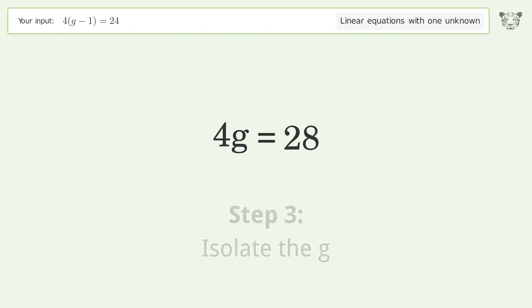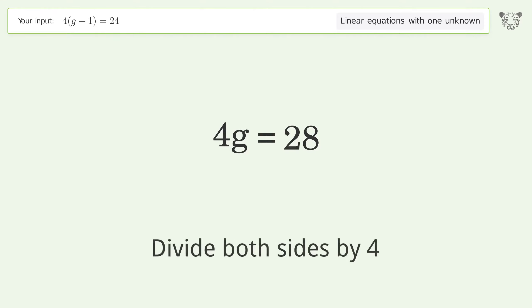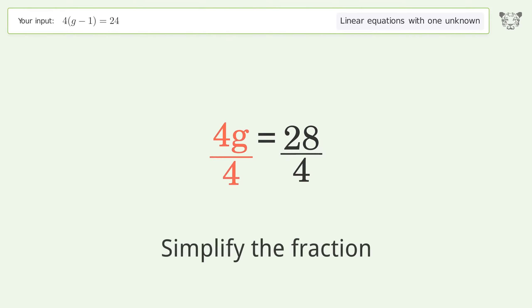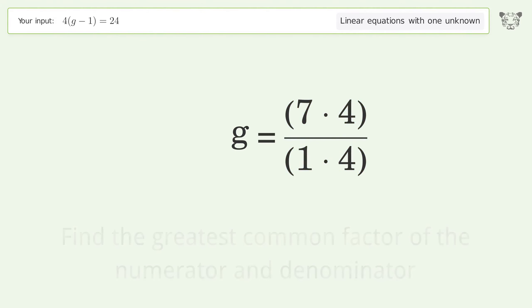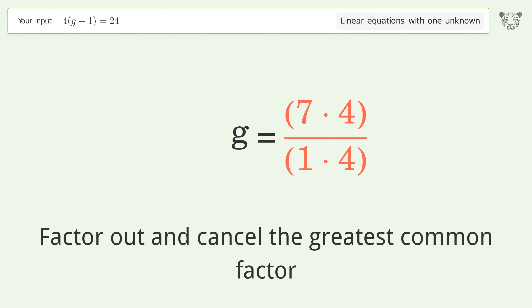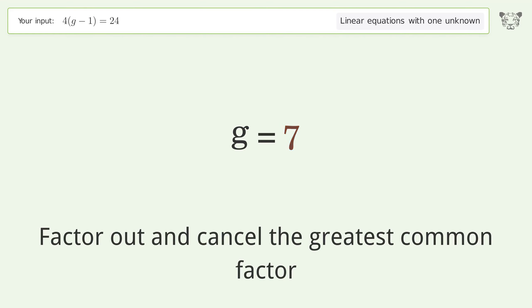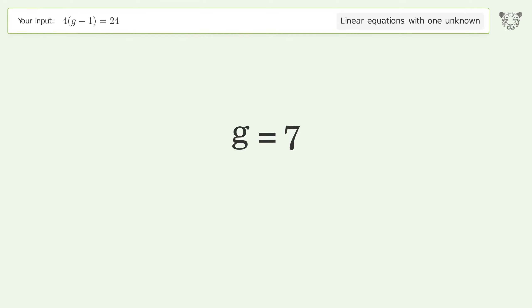To isolate g, divide both sides by 4, then simplify the fraction. Find the greatest common factor of the numerator and denominator, then factor out and cancel the greatest common factor. And so the final result is g equals 7.